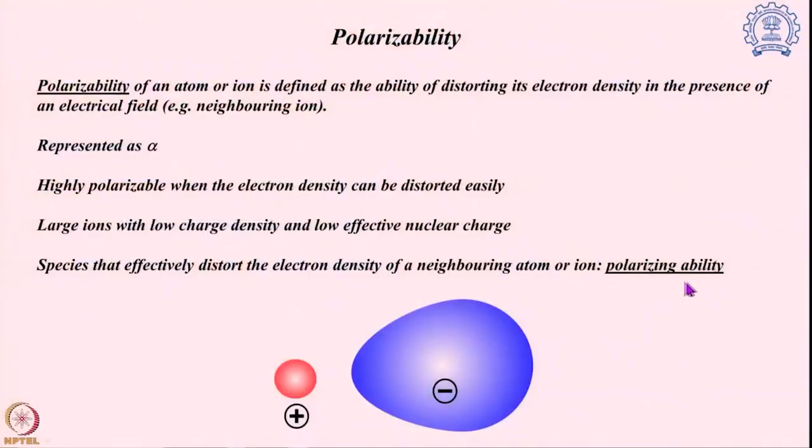Combining these ideas, a highly polarizable system is one where ions are larger in size, have very low charge density, and low effective nuclear charge, so the nucleus has little control over the electron density. A less polarizable system — a small ion with very high charge density — cannot be distorted easily, but it can have high polarizing ability because it can use its large charge density to control the electron density of neighboring ions or ligands. So high polarizable systems have less polarizing ability, whereas low polarizable systems have higher polarizing ability.